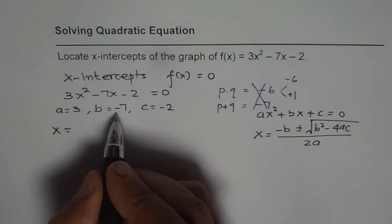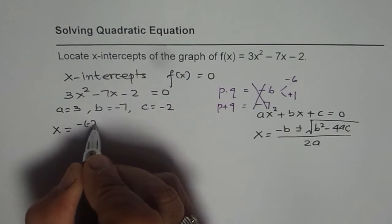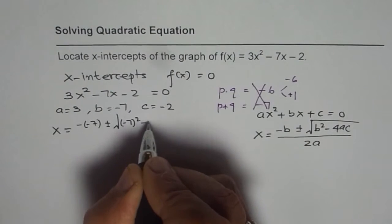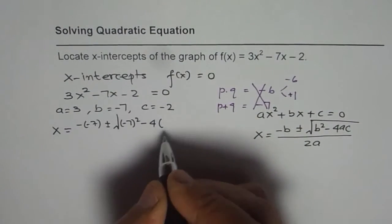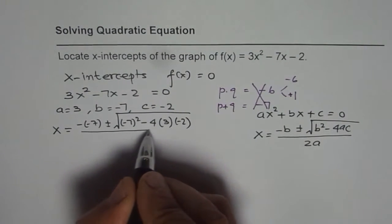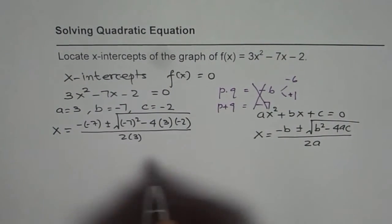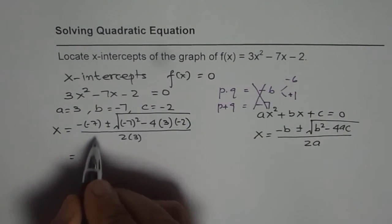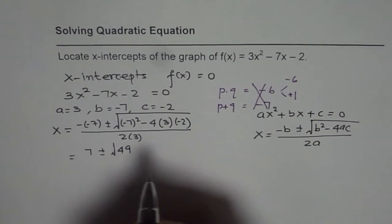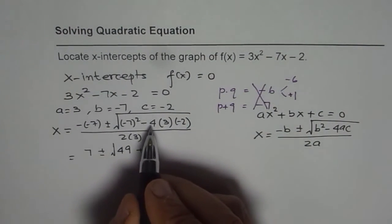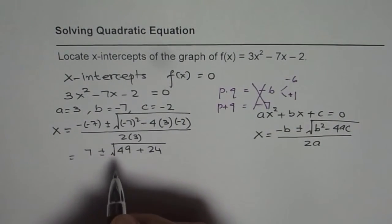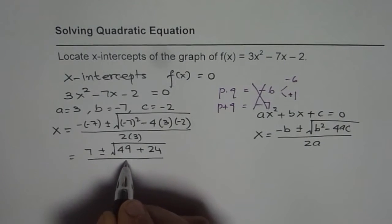We get x equals minus of b, that means minus of minus 7, plus or minus square root of (-7)² minus 4 times 3 times (-2), divided by 2 times 3. Let's simplify. Minus of minus 7 is plus 7, square root of 49, minus and minus is plus. 4 times 3 is 12, 12 times 2 is 24, divided by 6.